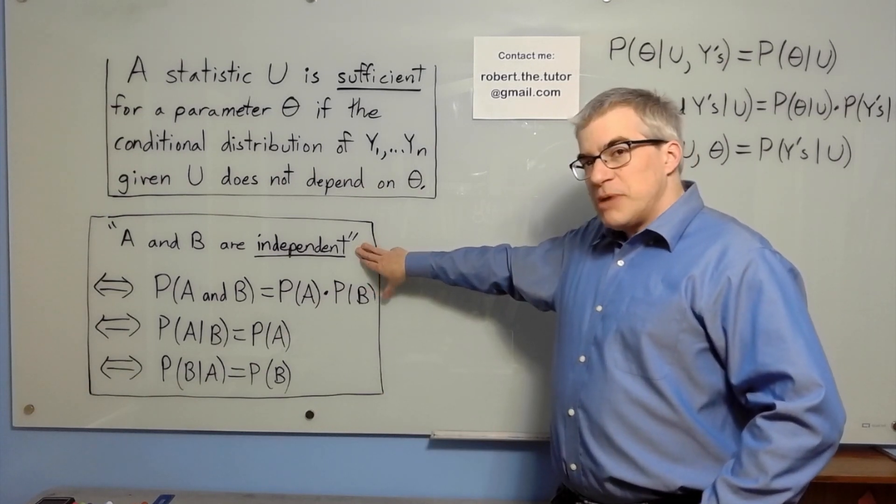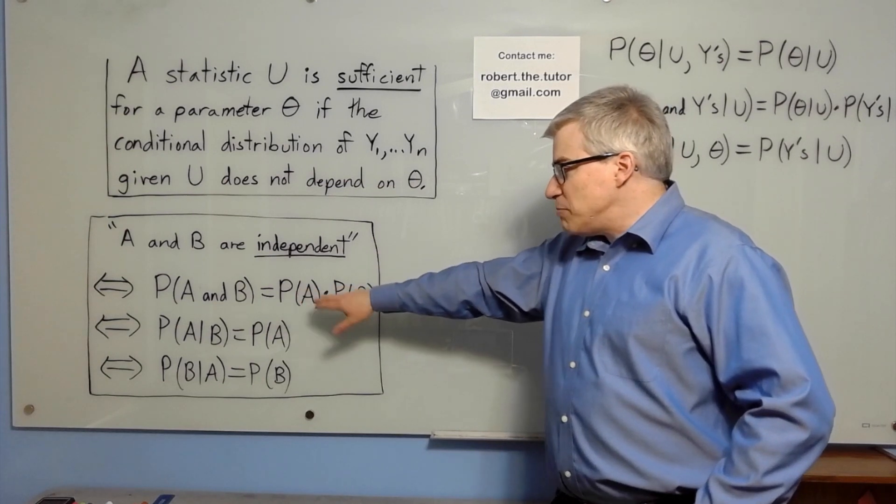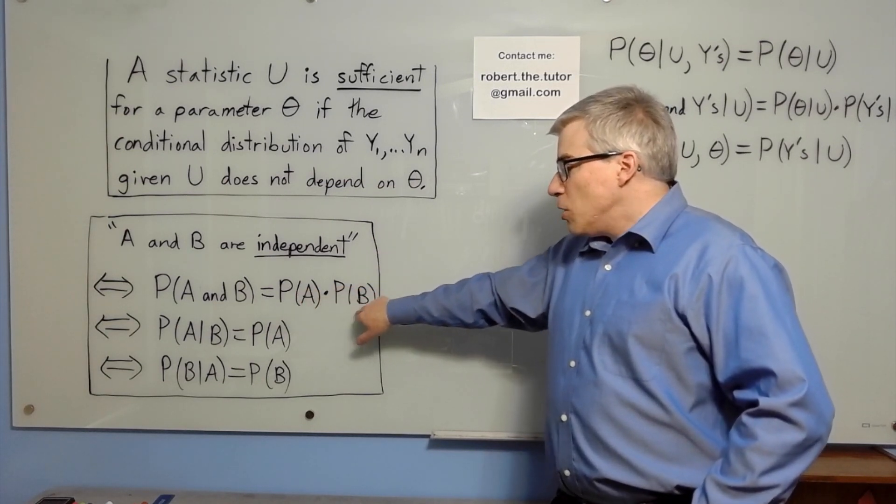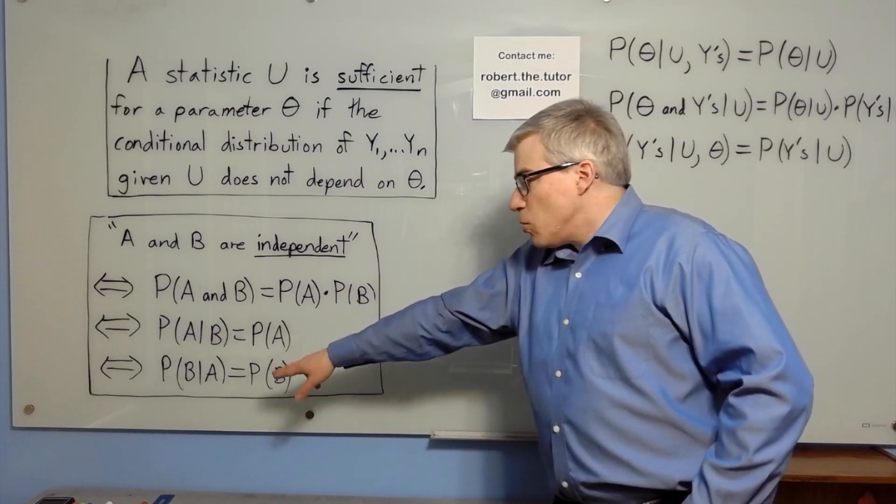See, to say that A and B are independent, you can say it three different ways. You can say probability of A and B is probability of A times probability of B, or you can say probability of A given B is probability of A, or likewise with B.